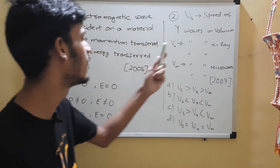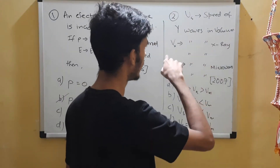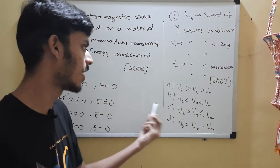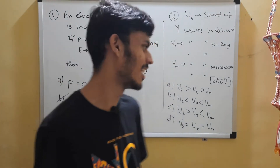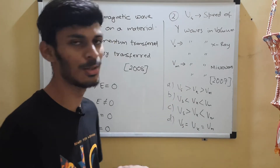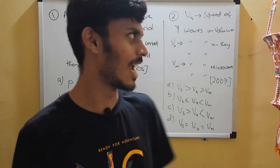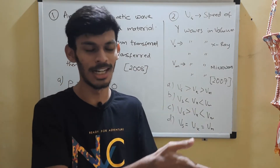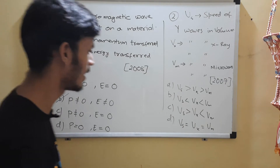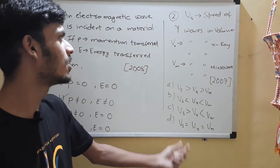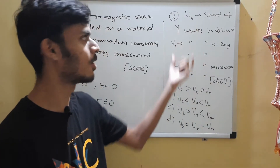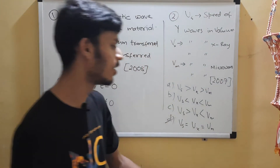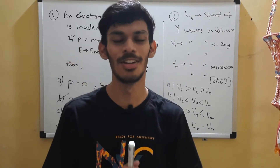Question 2 is from 2007. Here we are given: Vs is the speed of gamma waves in vacuum, Vx is the speed of X-rays in vacuum, and Vm is the speed of microwaves in vacuum. You are supposed to find a relation between them. All three of them are electromagnetic waves, and in vacuum they have the same speed — 3×10⁸ meters per second. So the correct answer is option D: all three will have equal speed, because all three are electromagnetic radiations measured in the same medium.